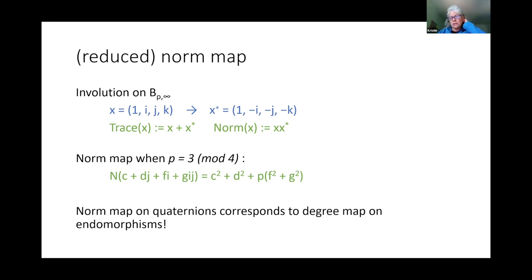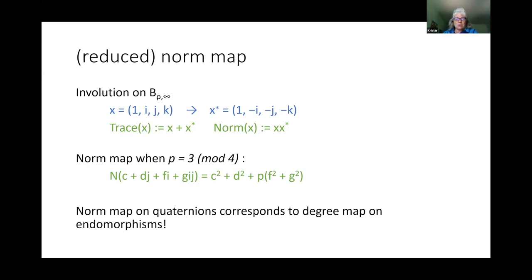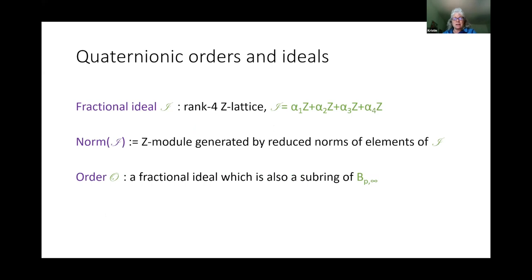Another thing that's very important for the Deuring correspondence and the relationship between the quaternionic side and the elliptic curve side is that the norm map on quaternions corresponds to the degree map on endomorphisms. I'll explain this better in the setting of the Deuring correspondence when we return to that.